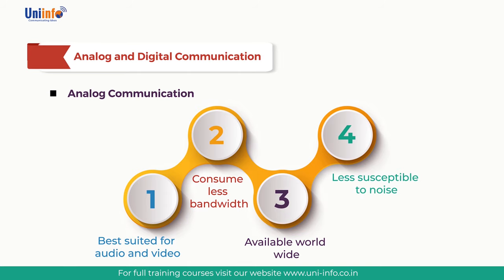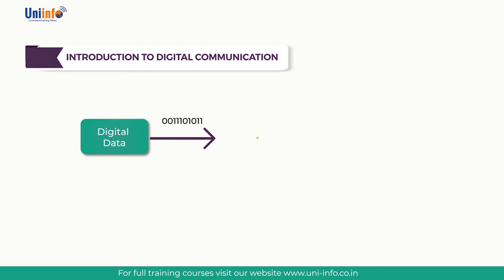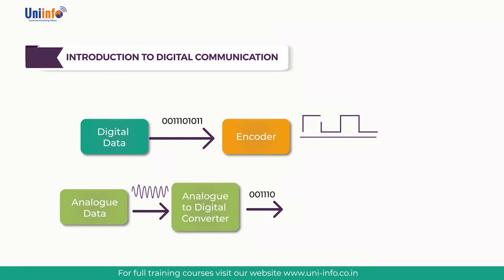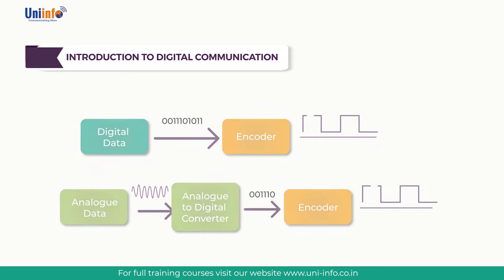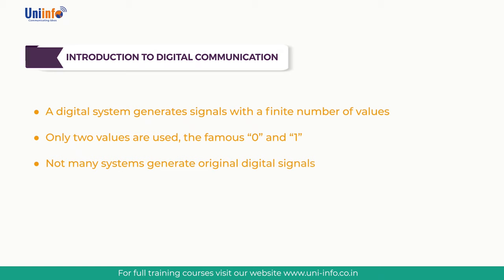Now let us understand digital communication. Digital communication systems send information over a physical communication medium in the form of digital signals. Since the source of information is usually in analog form, those analog signals must be digitized first before being transmitted. A digital system generates signals with a finite number of values — in most cases only two values are used: zero and one. Analog sources must be converted into zeros and ones before being transmitted; zeros and ones are logical states.